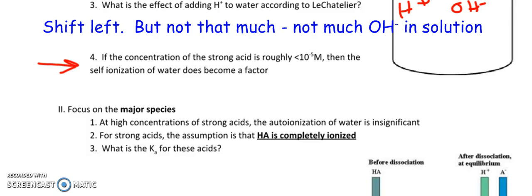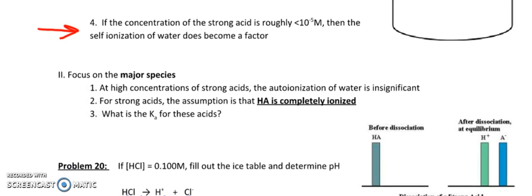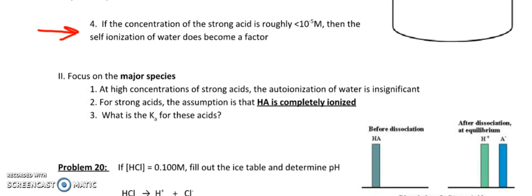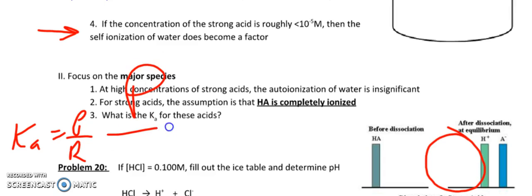So again, for strong acids, the H+ is completely ionized. And the question is, what is the Ka for these acids? Ka is products over reactants, I know you've seen that before. And if it is self-ionized, I have none of that acid left, correct? So my products, I have lots of products, but I have no reactants. What is any number divided by zero? It's infinity. So we don't use the Ka for those six strong acids.